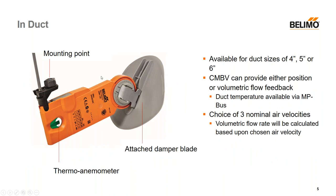We also have the induct actuators, which is a really nice solution. These go into your ductwork and mount with a single screw. They use a thermo-anemometer to make volumetric flow measurements and come with an attached damper blade in sizes of four, five, or six inches. The CMBV line can provide feedback in either position or volumetric flow. If you are using Belimo MP bus — a proprietary bus network from Belimo — you can also get duct temperature feedback as well, which is a nice advantage.